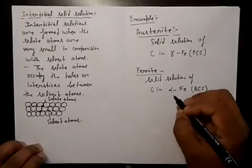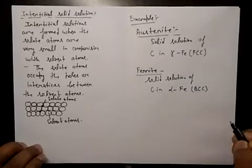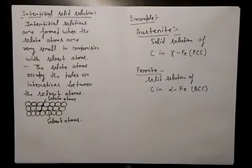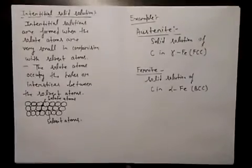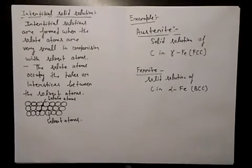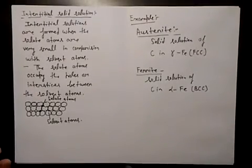And ferrite, what is ferrite? Solid solution of carbon in alpha iron in BCC structure. So this was about solid solutions. Hope you have understood. If you have any query, please ask in the comment box. Thank you.